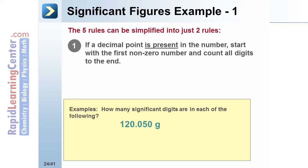This example has a decimal place. Start with the first non-zero number and count to the end. Again, there is a decimal place in this number. Start with the first non-zero number and count to the end.